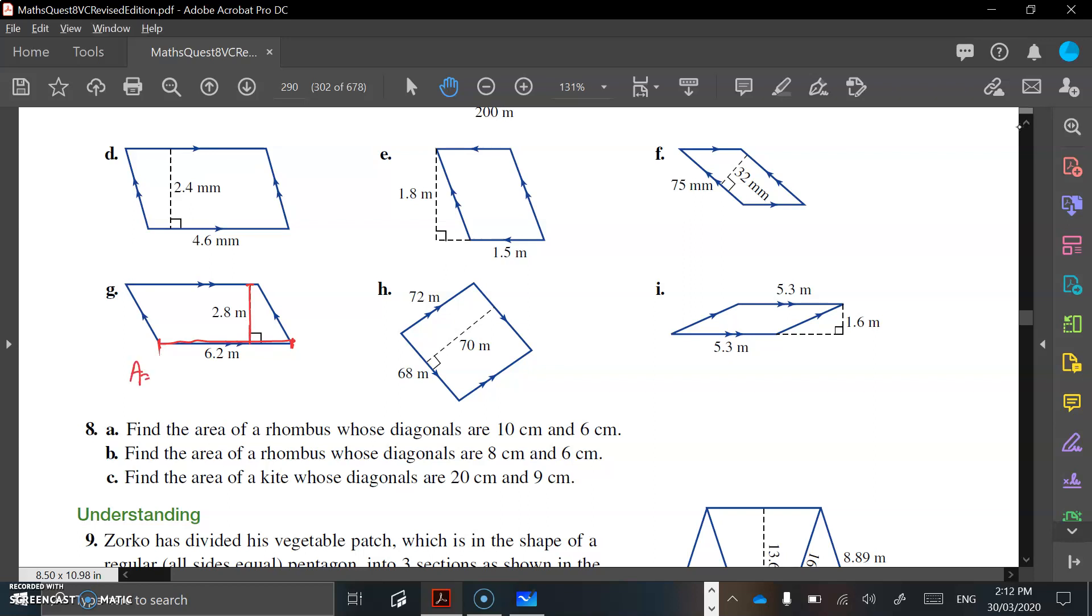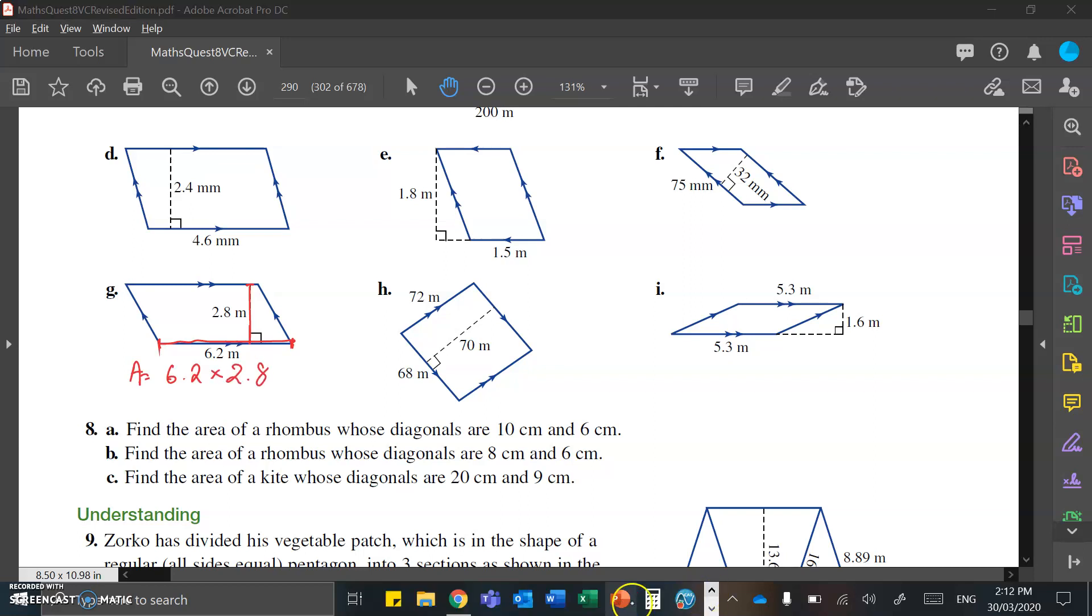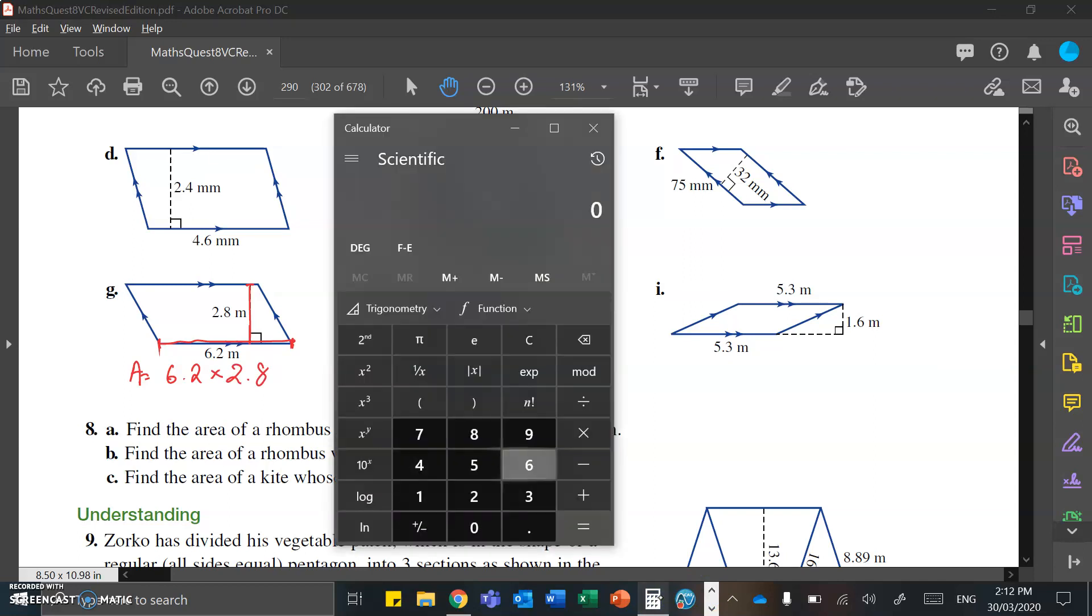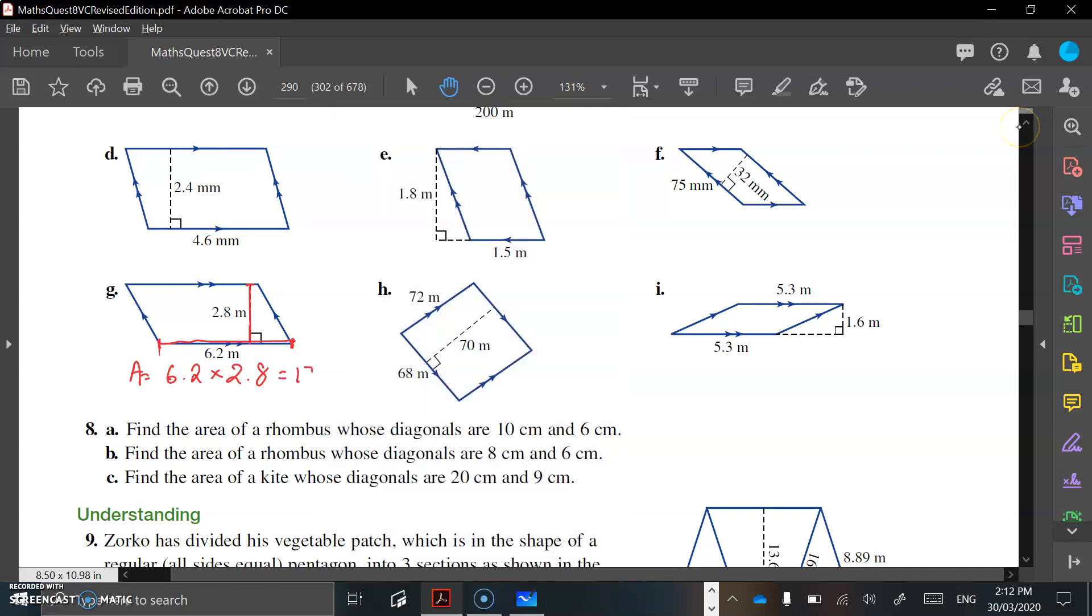So our area for a parallelogram is 6.2 times 2.8, which is going to give us 17.36, 17.36 meters squared.